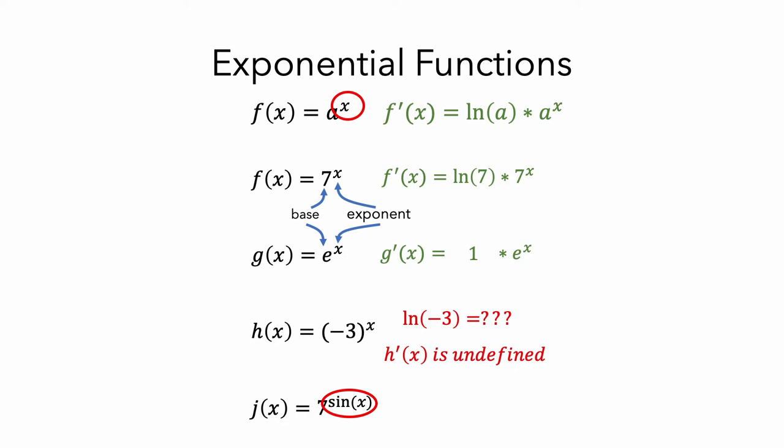What if we had something a little simpler in the exponent, like 2x? At first it looks like we're in the same situation as before, because our rule for derivatives of exponential functions requires that we just have x as an exponent. However, in some cases we can use properties of exponents to rewrite the equation. In this case, we can rewrite 7 to the 2x as 7 squared to the x, and now we have a base of 49 and an exponent of x, so we can apply the rule.